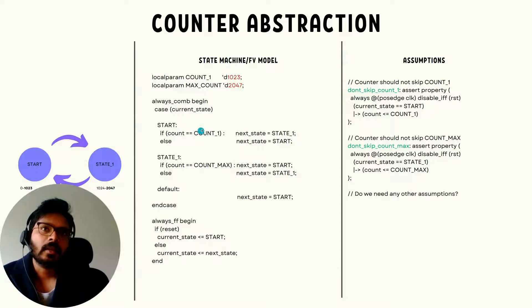And in state one, using the same logic, we can directly jump to the value of 2047, based on this assumption which simply says that once it is in state one, it shouldn't skip the value of counter_max, which is 2047.